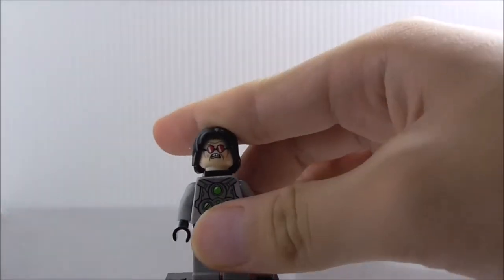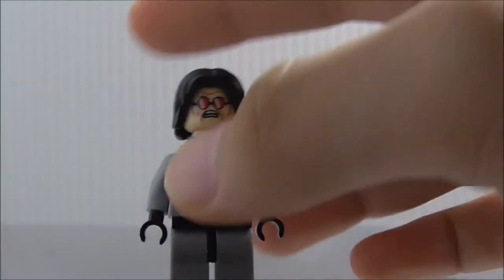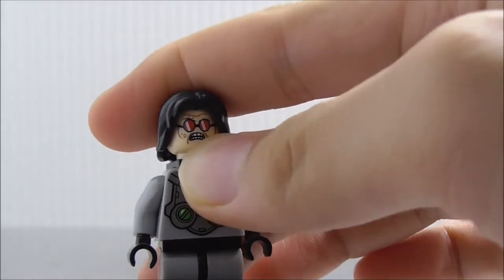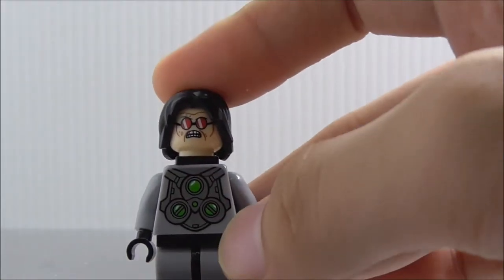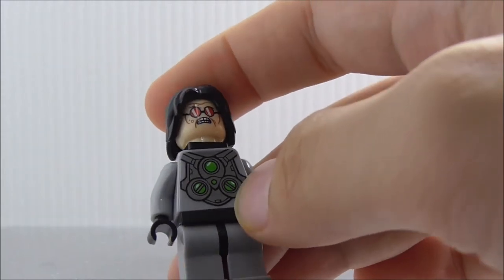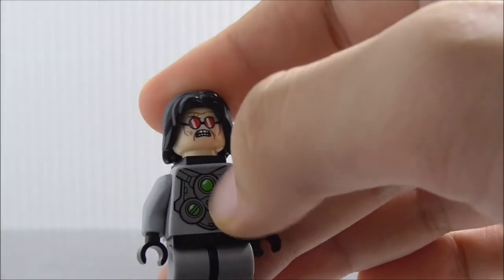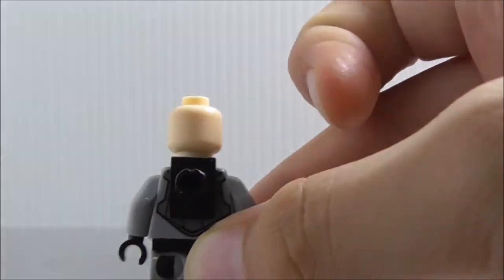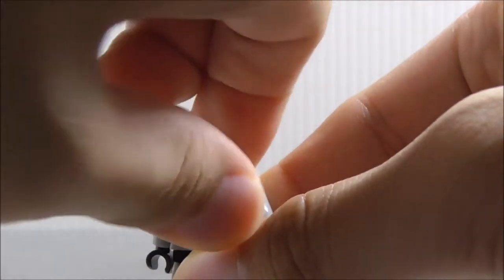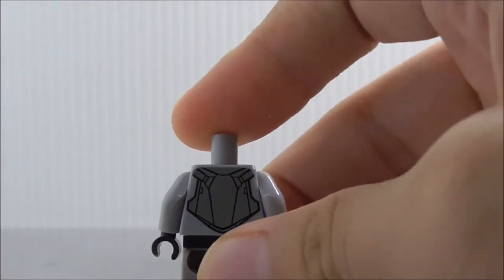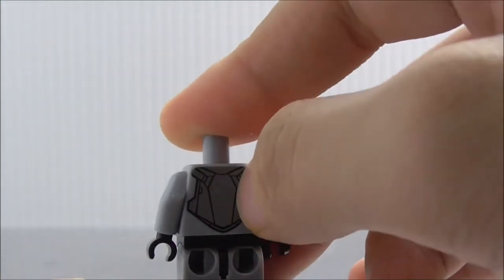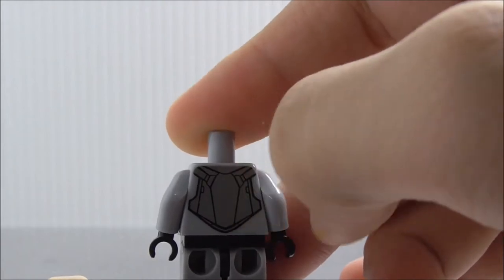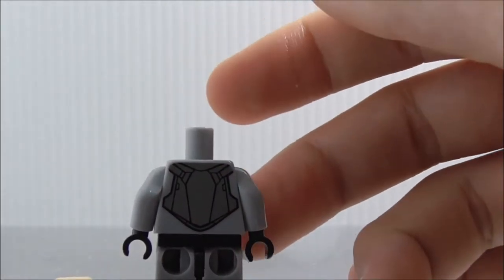You can see the face print here. You got his red glasses and his angry expression. The suit that he's wearing, you got some I guess printing. No leg printing for him though. I believe no alternate expression. He does have some back printing, just his kind of backpack or something with two straps. That's pretty much it for Doc Ock.